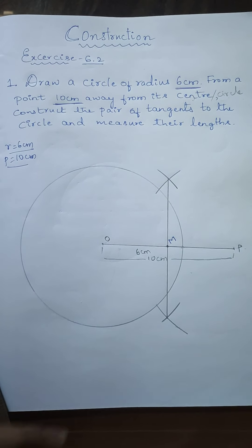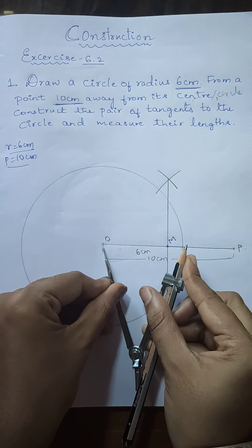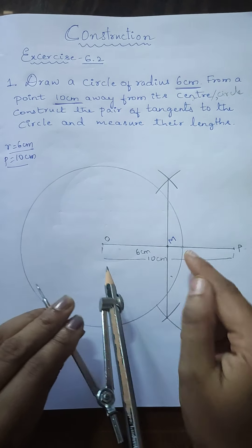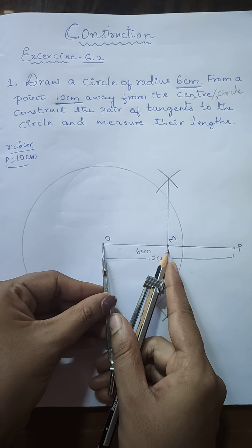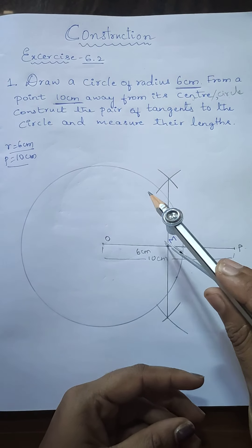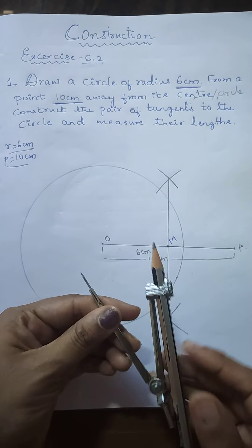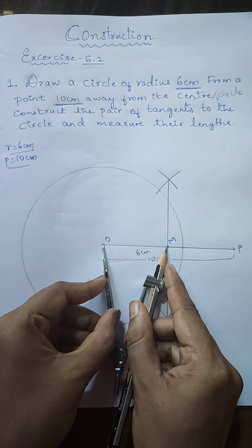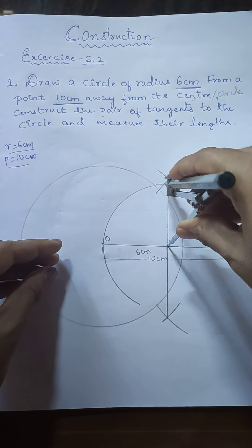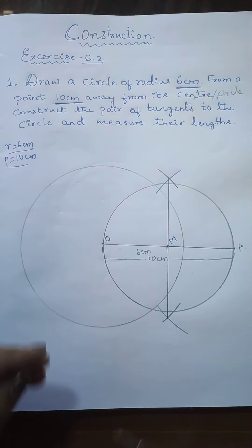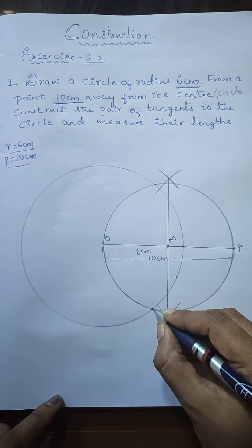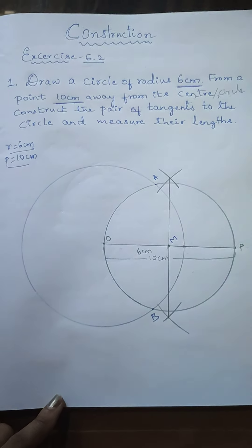Now, taking M as center and OM as radius, draw a circle. Note that this radius is neither 6 cm nor 10 cm — it is a different measurement. With M as center and OM as radius, draw the circle. We now have two circles meeting at two points — name these points A and B.